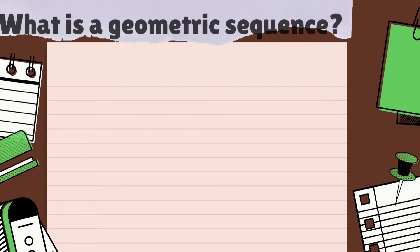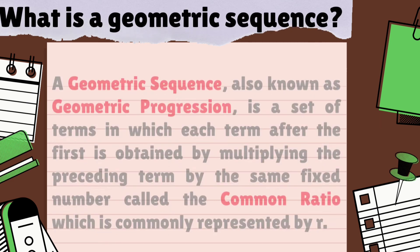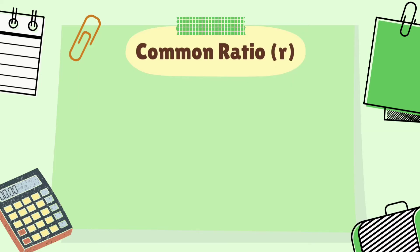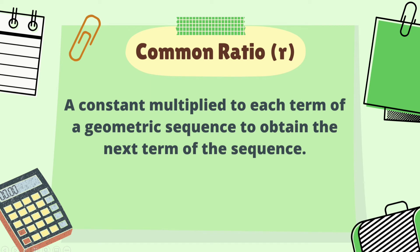So let's define geometric sequence. A geometric sequence, also known as geometric progression, is a set of terms in which each term after the first is obtained by multiplying the preceding term by the same fixed number called the common ratio. The common ratio is a constant multiplied to each term of a geometric sequence to obtain the next term of the sequence.